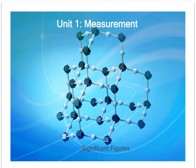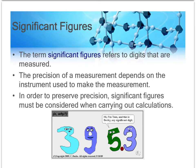This is a brief lecture about significant figures. Significant figures are important in science because they tell us about the precision of a measurement. The more precise a measuring device, the more significant figures you have.